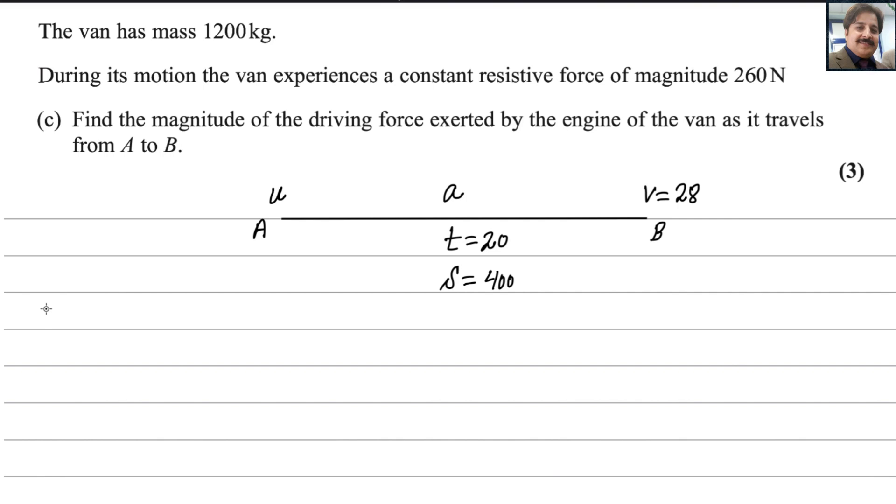Let me write this information in SUVAT equations: distance S is 400, u we need to find, v is 28, acceleration a is unknown, and time t is 20. Remember all those equations - if three things are known, the fourth you can find easily.